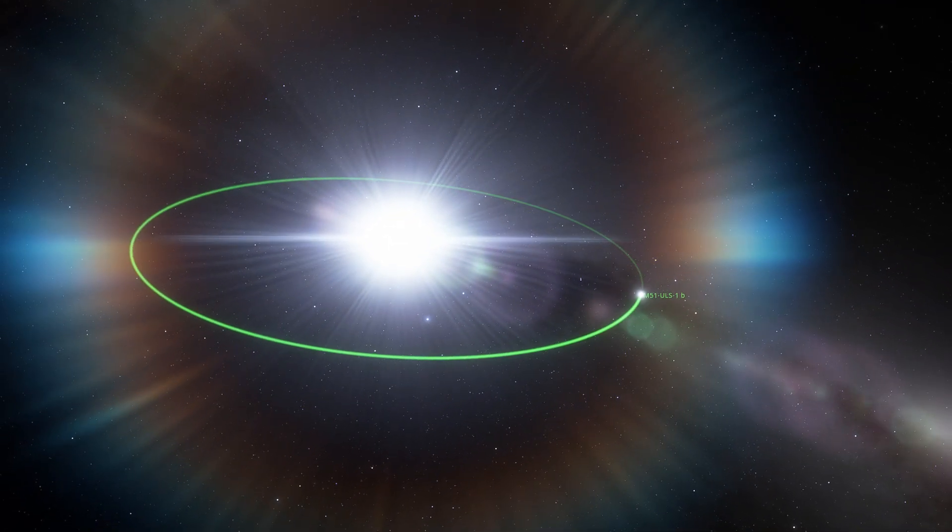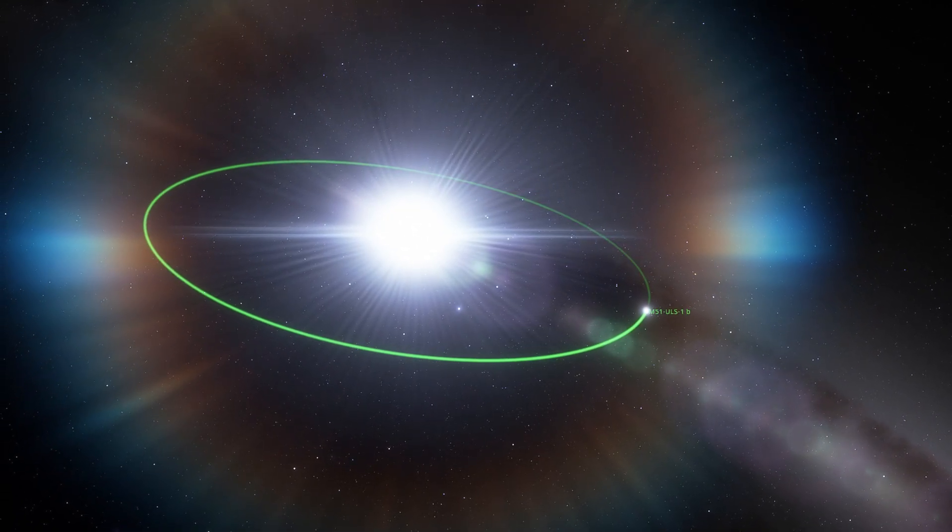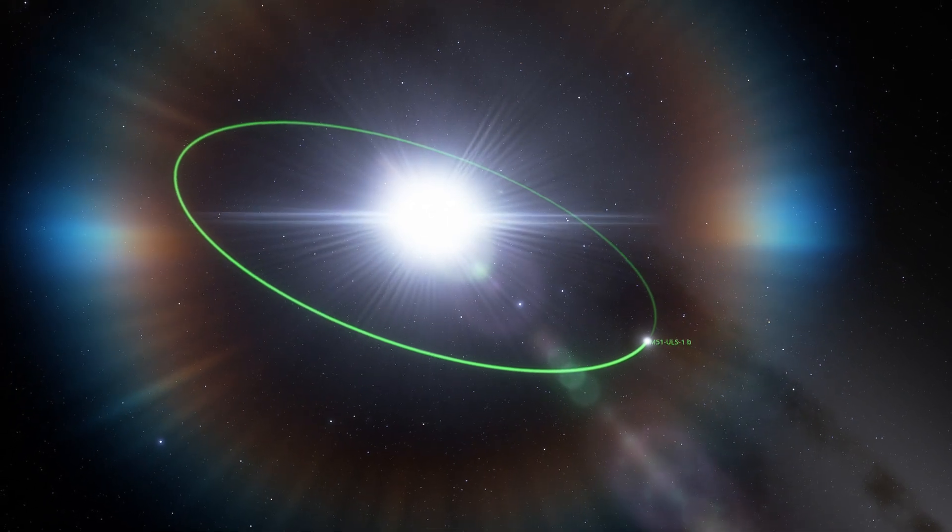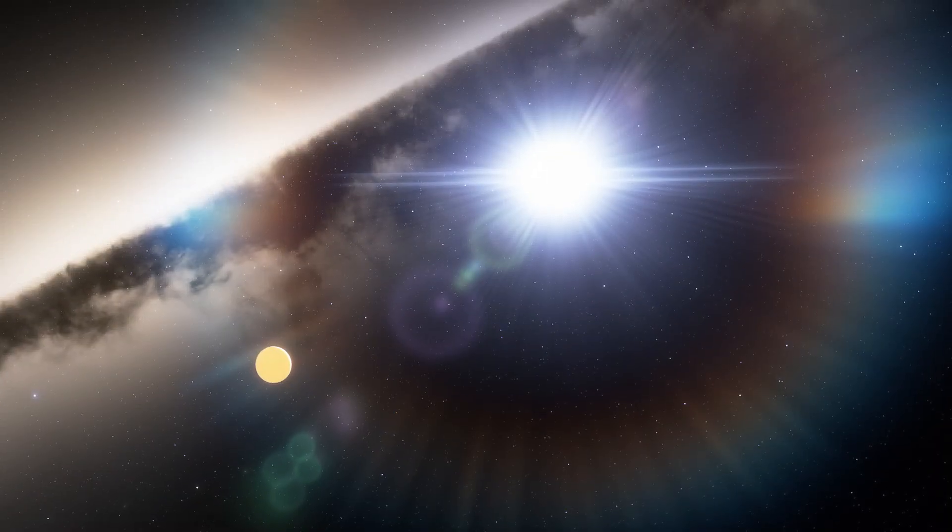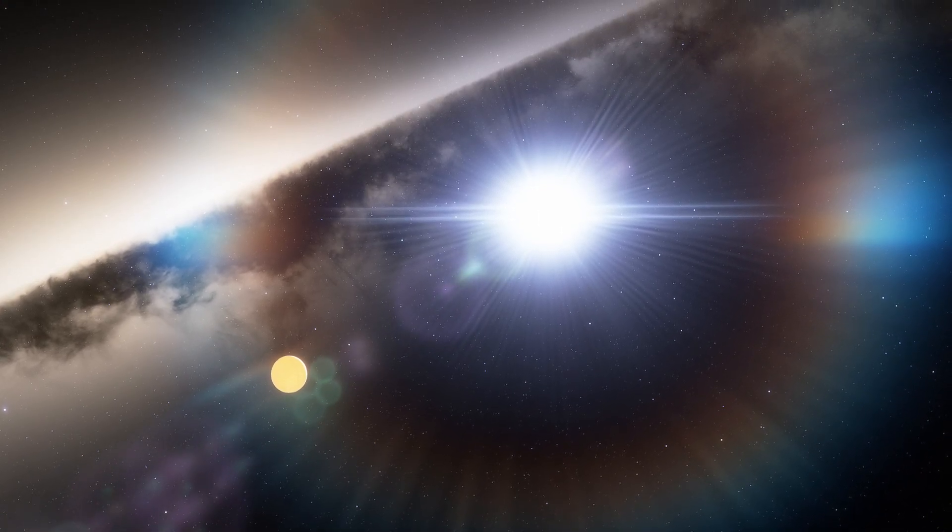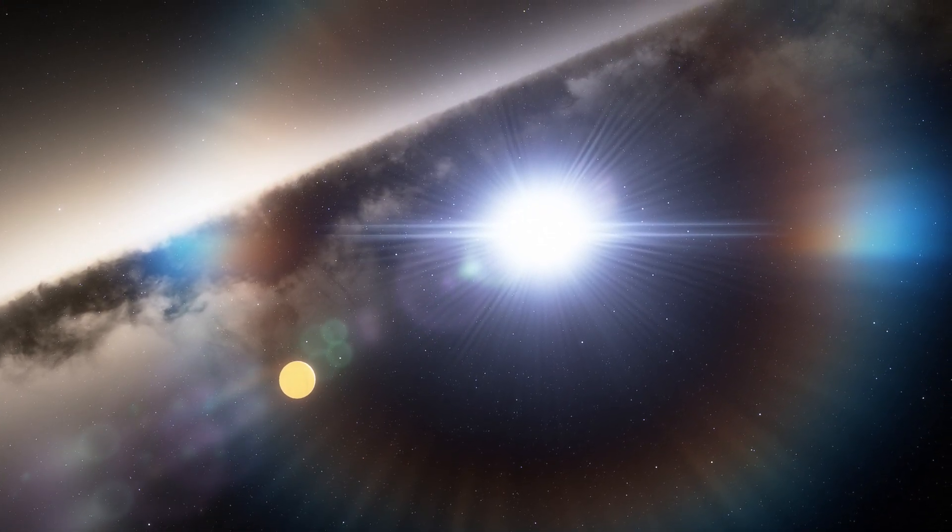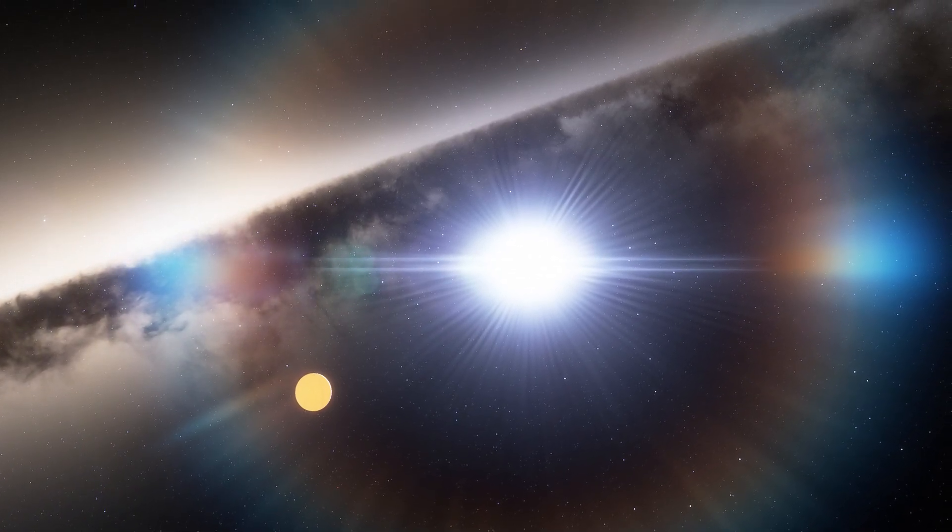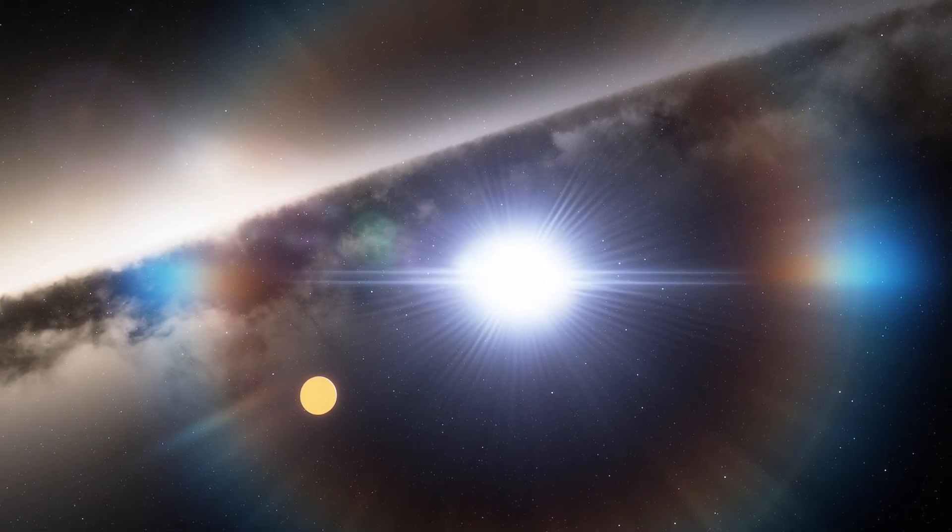The X-ray transit they witnessed lasted a total of about three hours, and the X-ray emissions dipped all the way to zero. Based on this and other data, the researchers believe that the exoplanet candidate is around the size of Saturn and orbits the neutron star or black hole at nearly twice the distance of Saturn from the Sun.